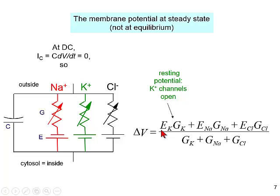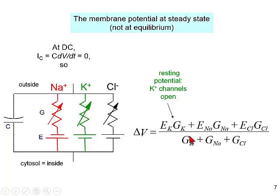We haven't talked about chloride much — though we did when we talked about the ivermectin channel after the Nobel Prize; that's a chloride channel. So if G_K is largest, then the potassium term dominates. If G_Na is largest, then the sodium term dominates, and so on.